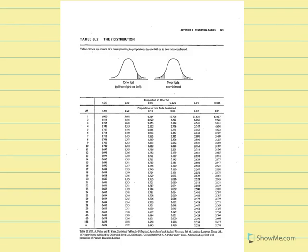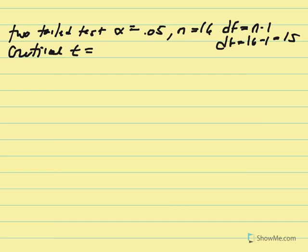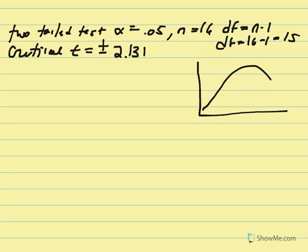Our critical t is equal to positive or negative 2.131. Drawing that out, we have negative 2.131 and positive 2.131, which establishes our critical region.